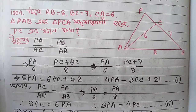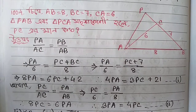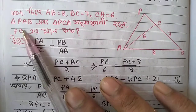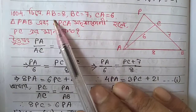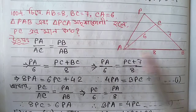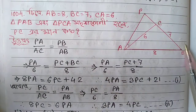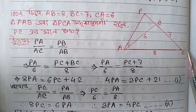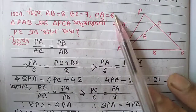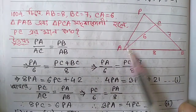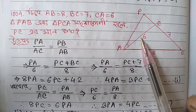Asalaamu alikum. Triangle ABC with AB equal to 8, BC equal to 7, and CA equal to 6.